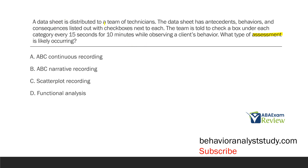What do we know already? You distribute a data sheet to technicians, and this data sheet has antecedents, behaviors, and consequences already listed out with checkboxes — meaning we've coded the antecedents, behaviors, and consequences in the data sheet in order to take data. All you have to do is check what antecedent happened, what behavior happened, and what consequence happened. The team checks a box under each category every 15 seconds for 10 minutes. So we immediately know it's a direct assessment, not a functional analysis because we're not manipulating anything, and not a preference assessment because we're not doing any stimulus preference test.